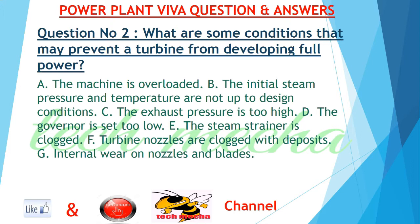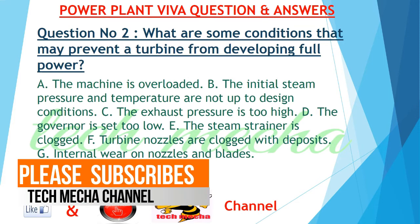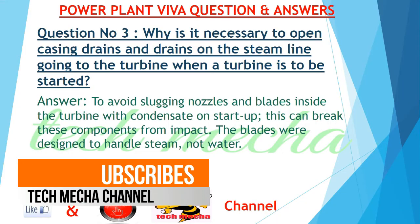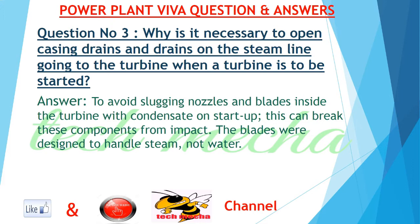Question number 2: What are some conditions that may prevent a turbine from developing full power? Answers: 1. The machine is overloaded. 2. The initial steam pressure and temperature are not up to designed conditions. 3. The exhaust pressure is too high. 4. The governor is set too low. 5. The steam strainer is clogged. 6. Turbine nozzles are clogged with deposits. 7. Internal wear on nozzles and blades.